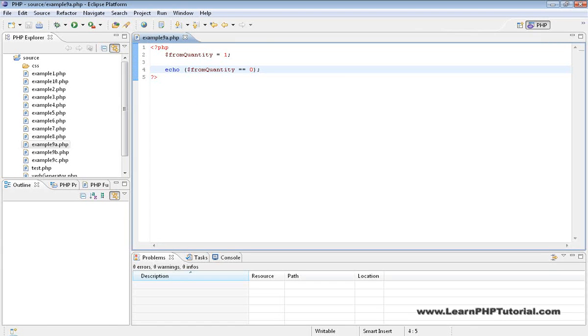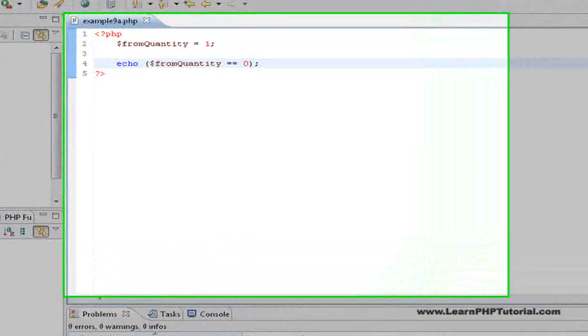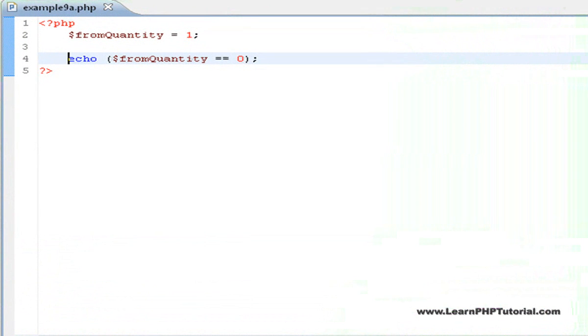Let's try experimenting with a few comparison operators in example 9a. There are two simple statements in this program. The first assigns the value of 1 to from quantity. The second uses the familiar echo command, but it's the stuff after this that's new.